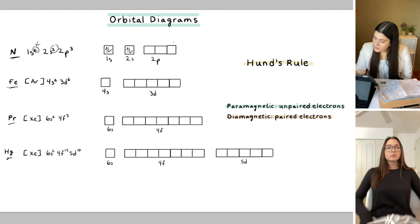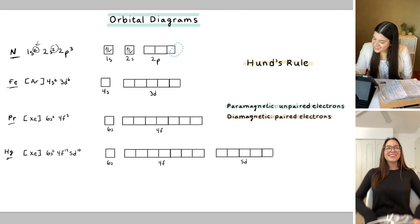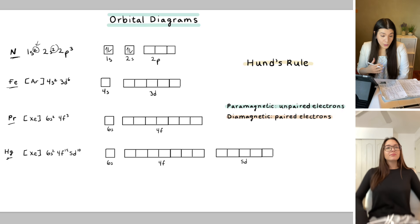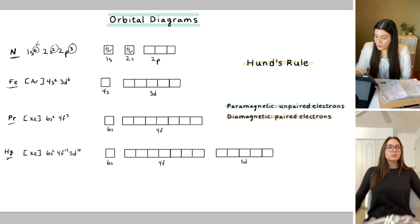So there are three orbitals within the p subshell, as we learned before. So there are three electrons here. So that means instead of this going one, two, three, that would be wrong. We actually fill each individual orbital first. So this is one, two, and three. That's Hund's rule.